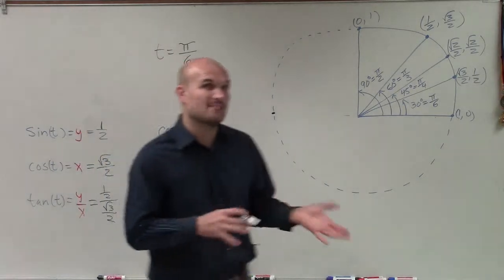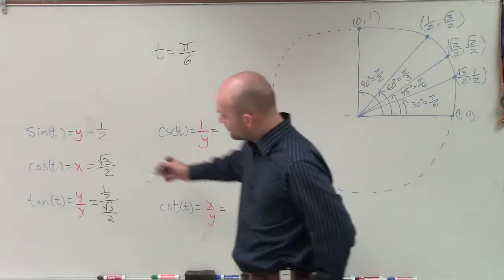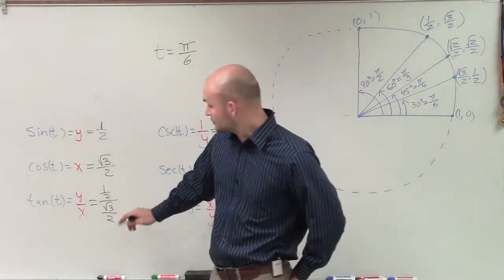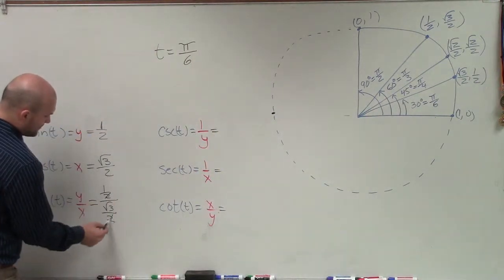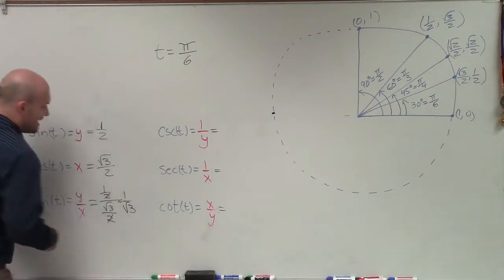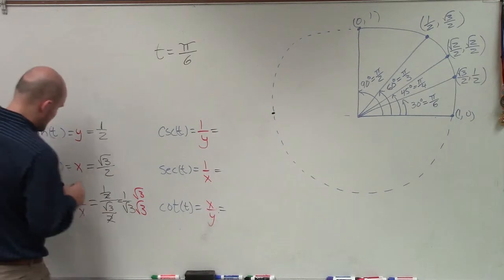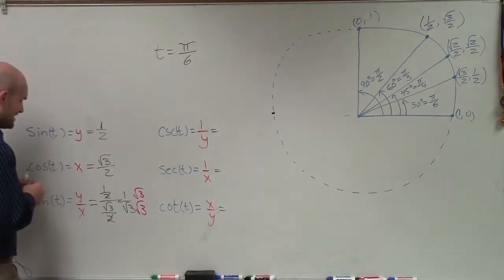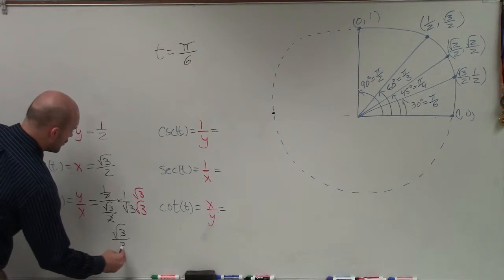Now, I know in a couple of other videos I've kind of broken this down, and I'm going to try to simplify this a little bit quicker. When we have 1 half divided by square root of 3 over 2, since we're both dividing here by 2, these 2's will divide out, and I'm left with 1 over the square root of 3, where then I need to make sure I rationalize the denominator. And therefore, my final answer for the tangent of t is going to be the square root of 3 over 3.